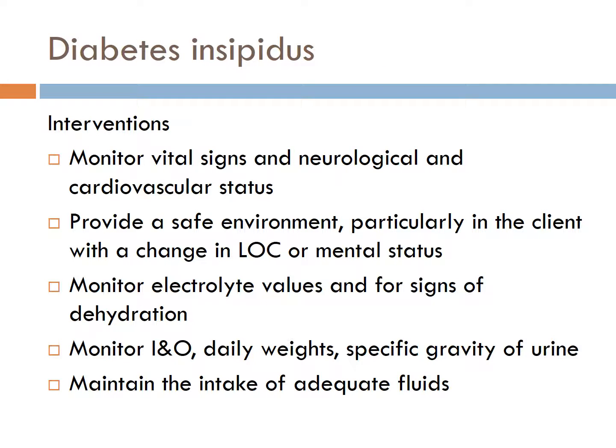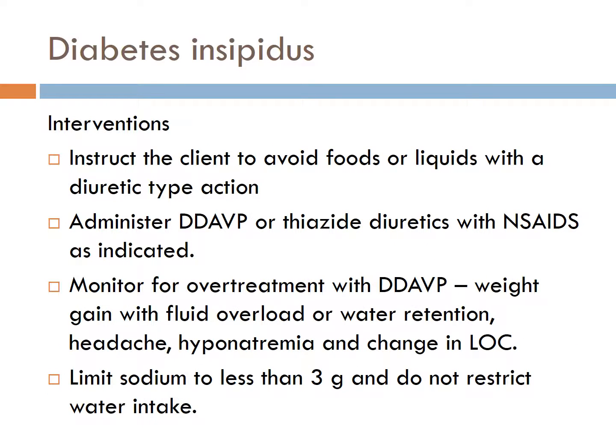Interventions include monitoring vital signs and neurological and cardiovascular status, providing a safe environment particularly for clients with altered level of consciousness, monitoring electrolyte values for signs of dehydration, monitoring intake and output, daily weights, and specific gravity of urine, and maintaining adequate fluid intake. Instruct the client to avoid foods or liquids with a diuretic effect. High protein diets increase urine output and excretion of sodium. Skin care is necessary. Administer medications including DDAVP or thiazide diuretics and monitor for over-treatment with DDAVP. Limit sodium to less than 3 grams and do not restrict water.